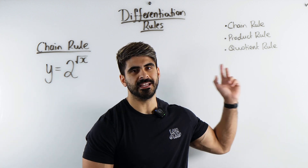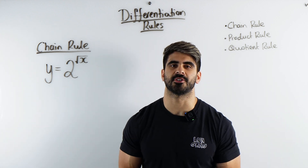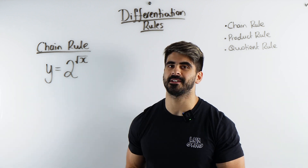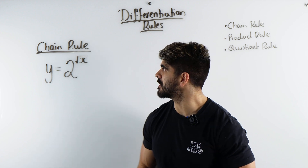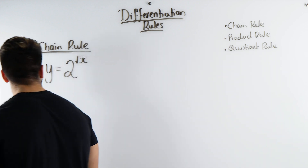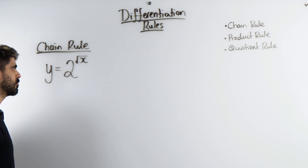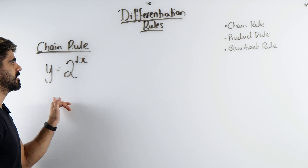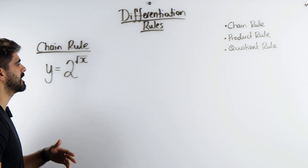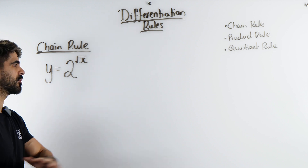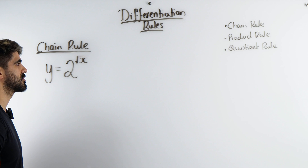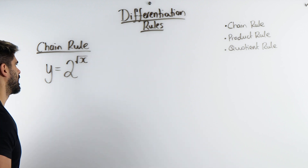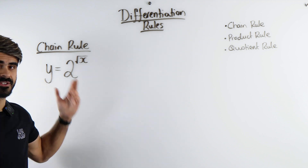If you still don't know these three differentiation rules, it's not looking good, but I'm going to revise them with you and apply them to some tough questions. So the first one is the chain rule. How do we differentiate something like y equals 2 to the power of root x? This looks like quite a tricky problem at the beginning, but all of my year 13s would find this super easy. Let me show you the idea behind this problem and what the chain rule actually is.